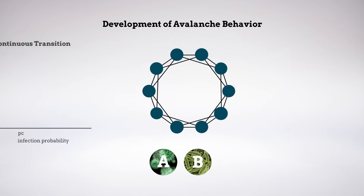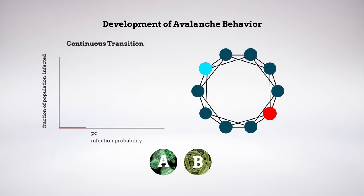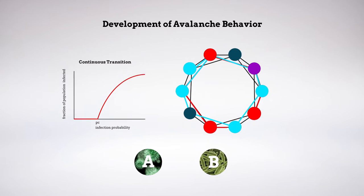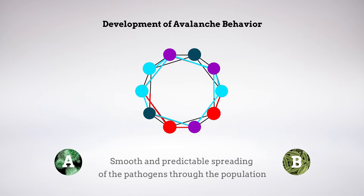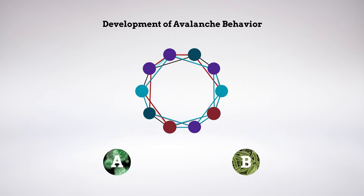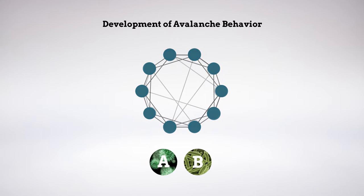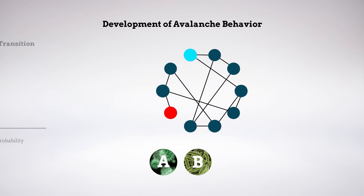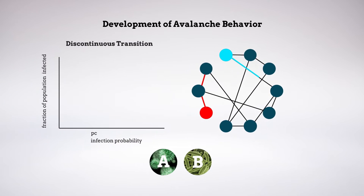Networks containing a large number of short loops allowed pathogen A and pathogen B to connect quickly. This network structure favoured pathogen cooperation and led to smooth and predictable spreading of the pathogens through the population. In contrast, networks containing a large number of long loops created long paths between A and B, delaying cooperation between the pathogens and leading to abrupt and therefore unpredictable spreading.